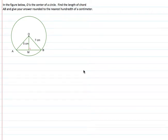Here we have circle O and they want us to find the length of chord AB and give the answer to the nearest hundredth of a centimeter.